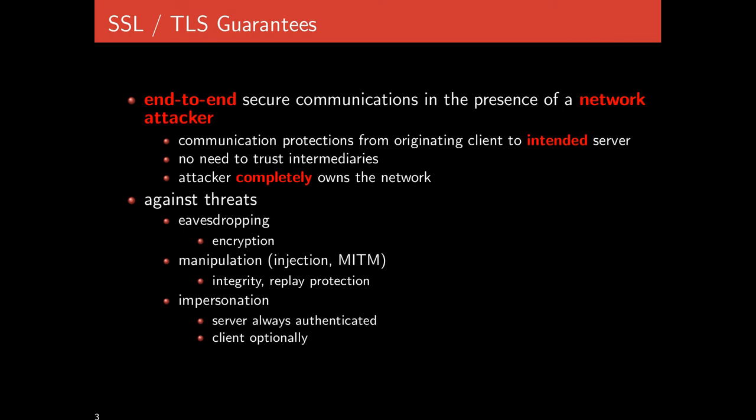The guarantees that TLS tries to provide is end-to-end secure communication in the presence of a network attacker — an adversary on the network that can be active. This is the classic Alice talking to Bob with Eve somewhere in the middle. End-to-end security means there are only two places that know the encryption key: the two endpoints that are actually talking. Only Alice and Bob are able to read the communication.